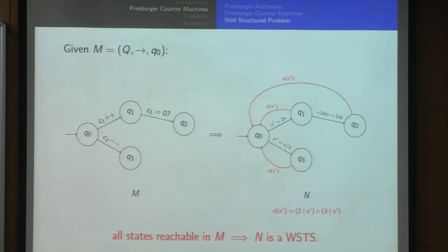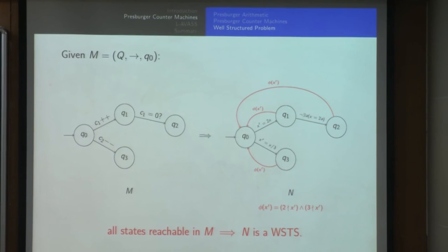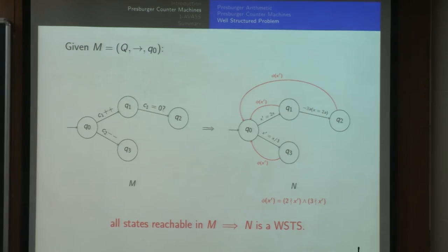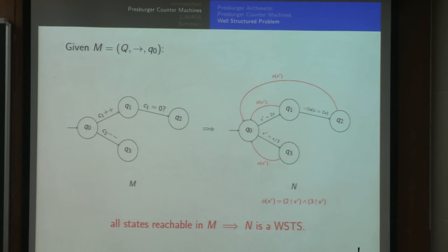But it does allow you to jump to arbitrarily large values, which is key. If you add these transitions, it gives you the property that if all states in M are reachable, then N will be a well-structured transition system. To see why: suppose I want to reach from Q1 to Q2 and cover Q2 comma N. I can jump from Q1 to Q0 with an arbitrarily large value greater than N. Since Q2 will be reachable from Q0 by hypothesis, I follow that reachability path and get a value larger than N.